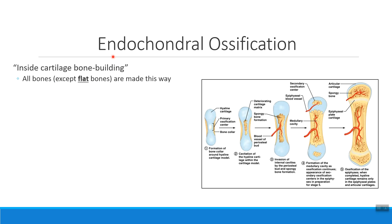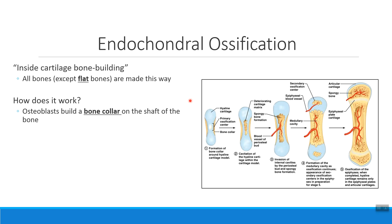Everybody else uses endochondral ossification — inside cartilage, bone building. When we talk about the process of endochondral ossification, we have to start with a cartilage model. We've built a cartilage model very early in embryonic development. When that model gets large enough, some cells called osteoblasts — my bone builders — build preliminary bone tissue around the middle of that bone. What they've built is called a bone collar.